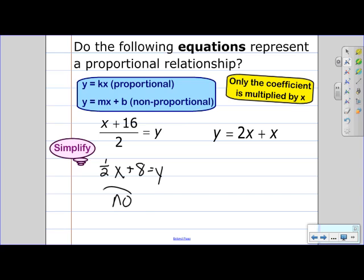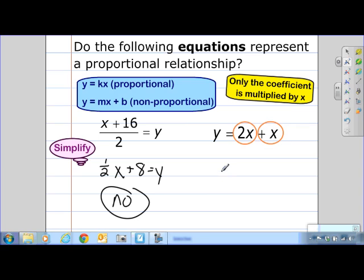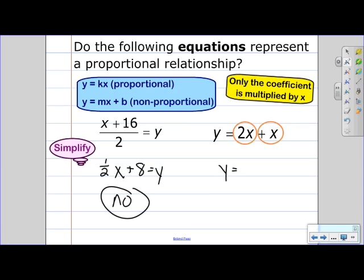We have 2x here and we have 1x here. If we combine those together, 2x plus 1x would give us 3x.